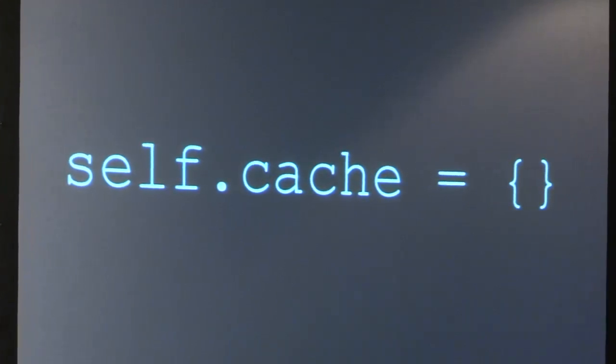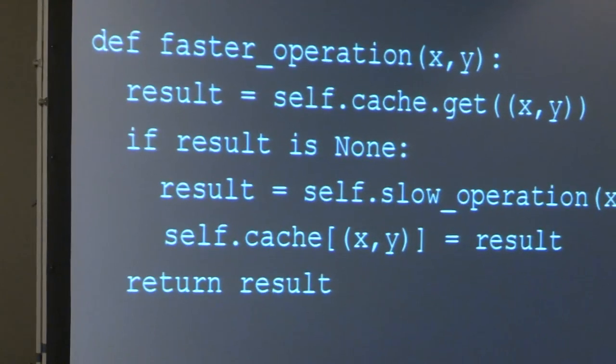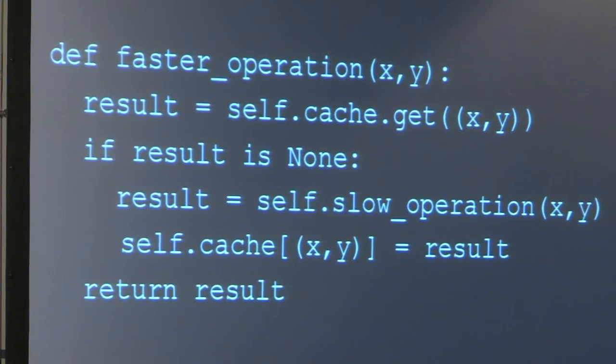So this brings me to the topic for today, which is caching. This is one of the tools in our toolbox for dealing with that critical three percent that Knuth was talking about. What is it? Essentially a cache is a dictionary — or to be more specific, it's a way of using a dictionary in order to make your application run a little bit faster.